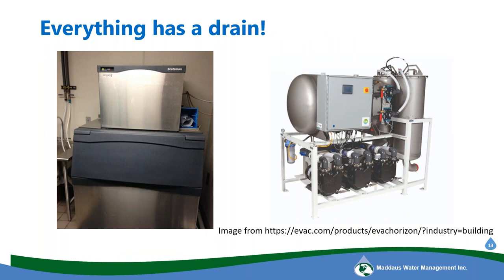Even though these pieces of equipment are intimidating, we don't have to be technical experts. We just have to know that if we're seeing constant flow, there could be a problem — and if we're seeing it for long periods of time, it's something to investigate. We can pass that over to technical experts, a technician, or call CII support from your water provider. And if you do investigate and find the equipment is designed to run constantly — like single-pass cooling — then it's time to upgrade to an Energy Star or WaterSense piece of equipment.